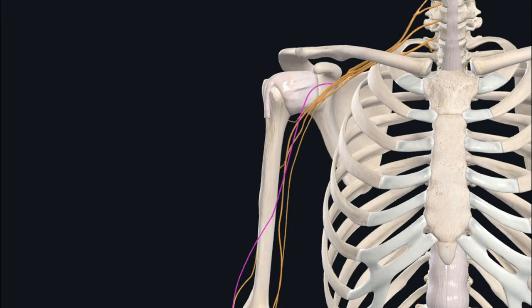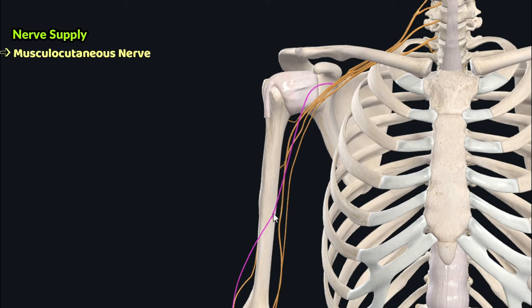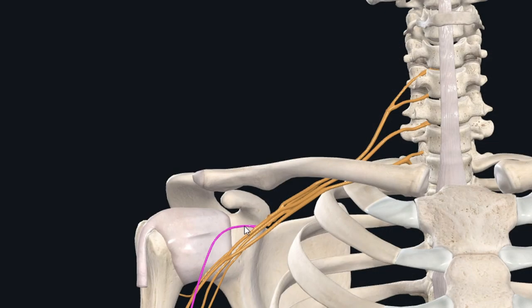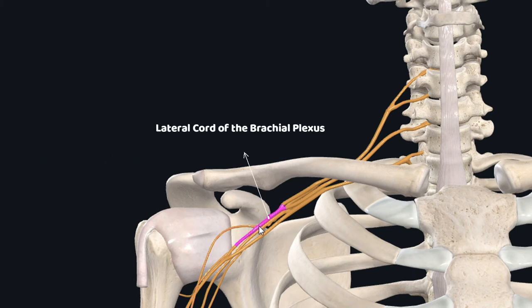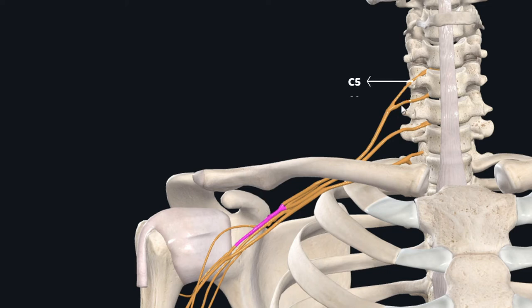The biceps brachii muscle is supplied by the musculocutaneous nerve. The musculocutaneous nerve originates from the lateral cord of the brachial plexus, which is made up of the anterior rami of the C5, C6, and C7 cervical nerve roots.